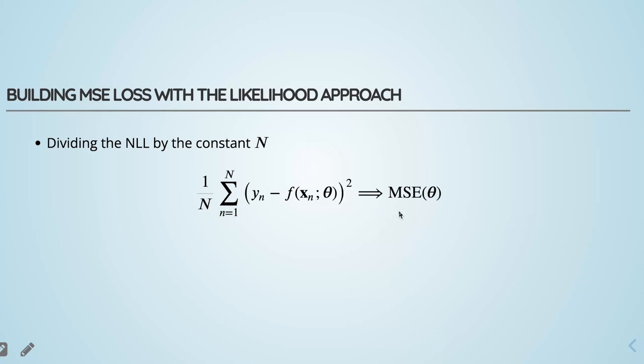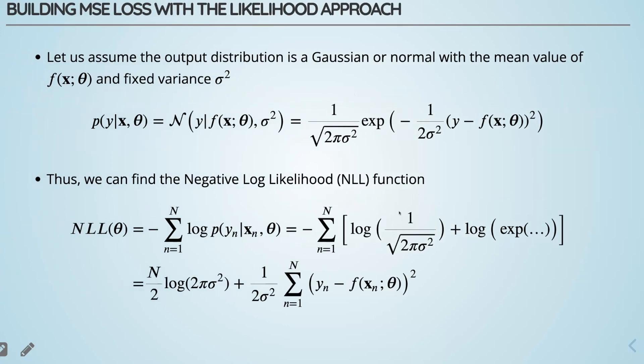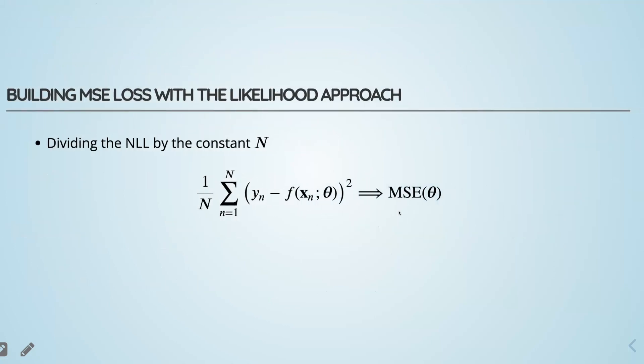This completes the proof that mean squared error is very much related to maximum likelihood estimation. One important thing to keep in mind is that we made the assumption that the output variable comes from a normal distribution with fixed variance sigma squared. If the variance depends on the input data, then we have to estimate it as well and the solution is not necessarily mean squared error.